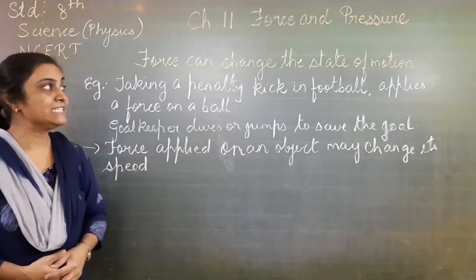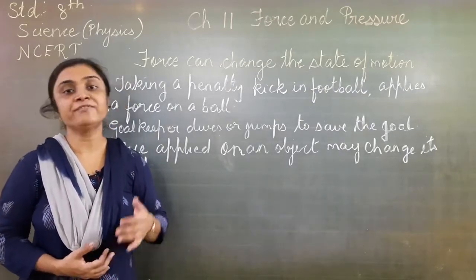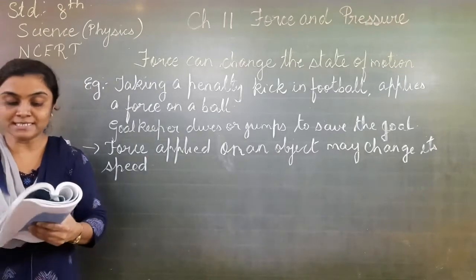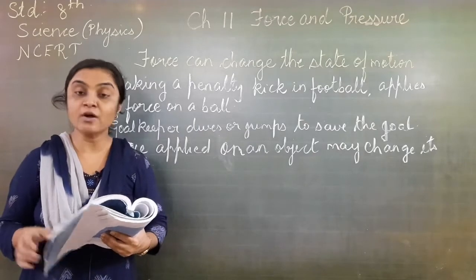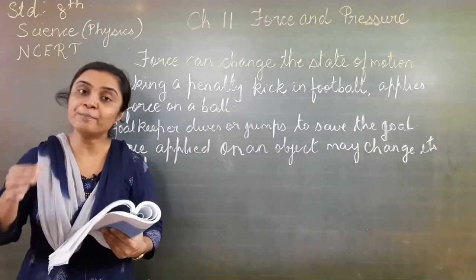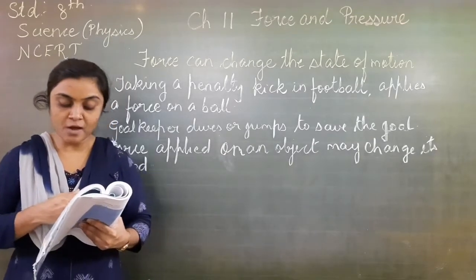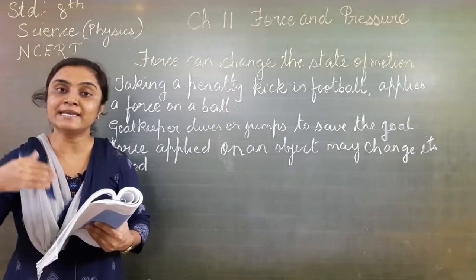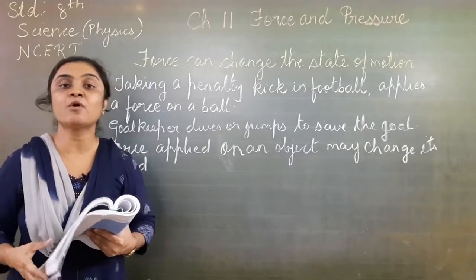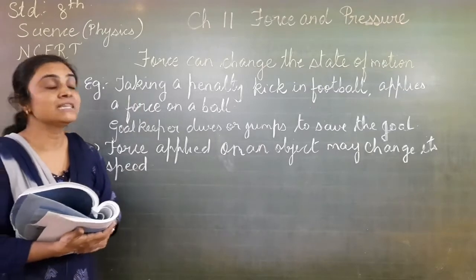Now let us see how force can change the state of motion. If the object is moving, how can force stop it? Or if the object is at rest, how can it start moving? One activity is given in the textbook. A rubber ball — if you place it on a level surface and gently push it, the ball will start moving. If you push it again, it will continue moving and the speed will increase. At the opposite side, if you just put your palm in front of the ball, the speed of the ball will decrease or the ball will change its direction. From this we can see that force can change the state of motion.